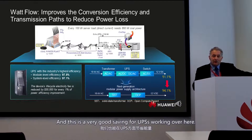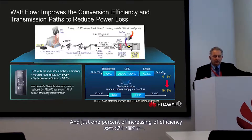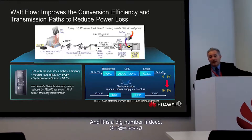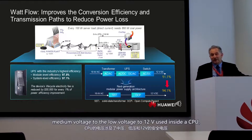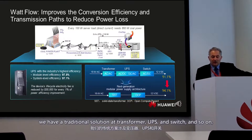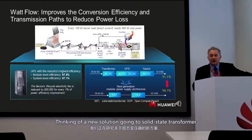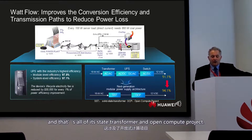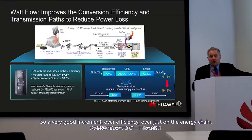This UPS efficiency provides very good savings since UPS systems run all day, all year. Just a 1% increase in efficiency can save around $40,000 per year. Looking at the full power chain inside the data center — from medium voltage down to 12 volts inside the CPU — a traditional solution achieves 91% efficiency. By adopting solid-state transformers and Open Compute Project architectures, we can reach 94% efficiency.